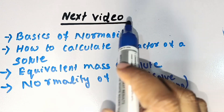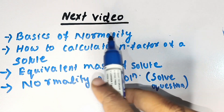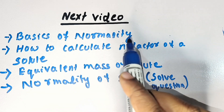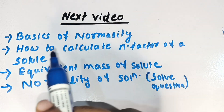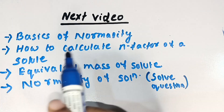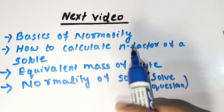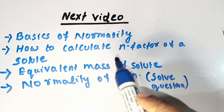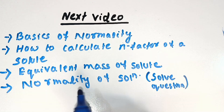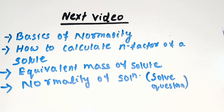In the next video we will study about basics of normality: the definition of normality, the unit of normality, and how normality of a solution is calculated. To calculate normality we should know how to calculate the n-factor of a solute and equivalent mass of solute, which we will also study in the next video. We will also solve a question on how to calculate normality of a solution. Thank you for watching the video.